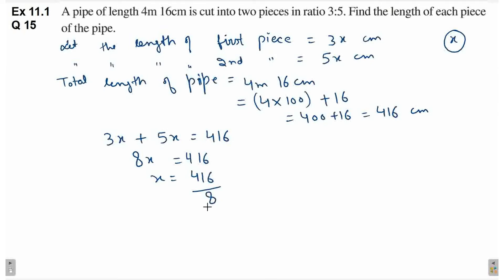In dono numbers ko mein 4 ke saath divide kar dihati houn pehle. 4, 2s are 8. 4, 1s are 4. 0. 4, 4s are 16. 2, 1s are 2. 2, 5s are 10. 2, 2s are 4. So, x is equal to 52.